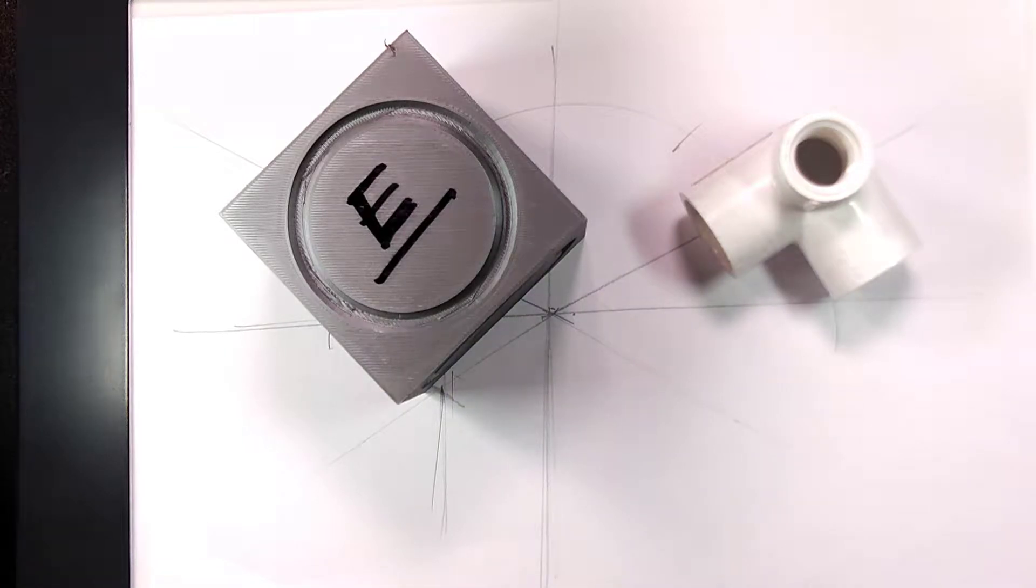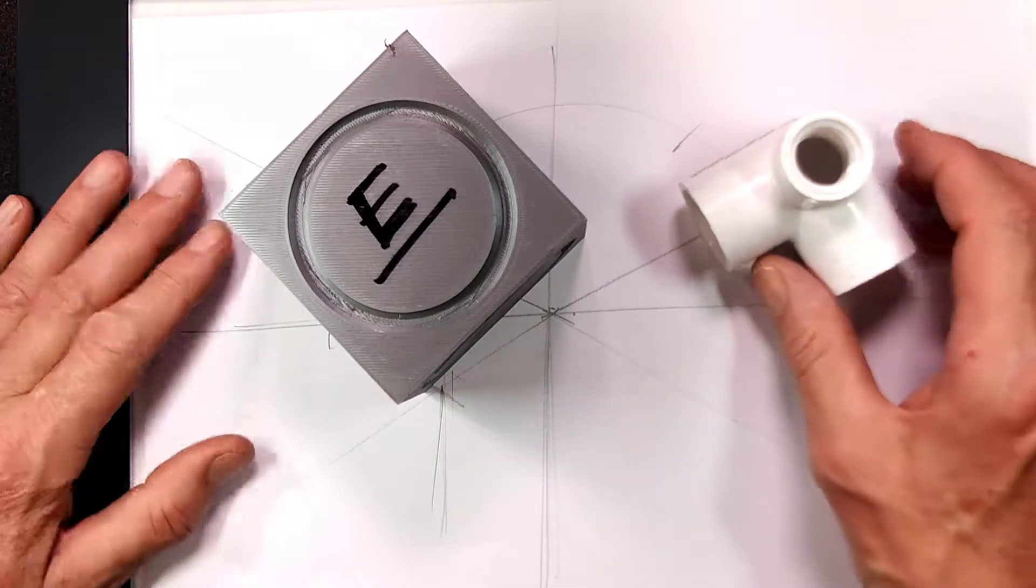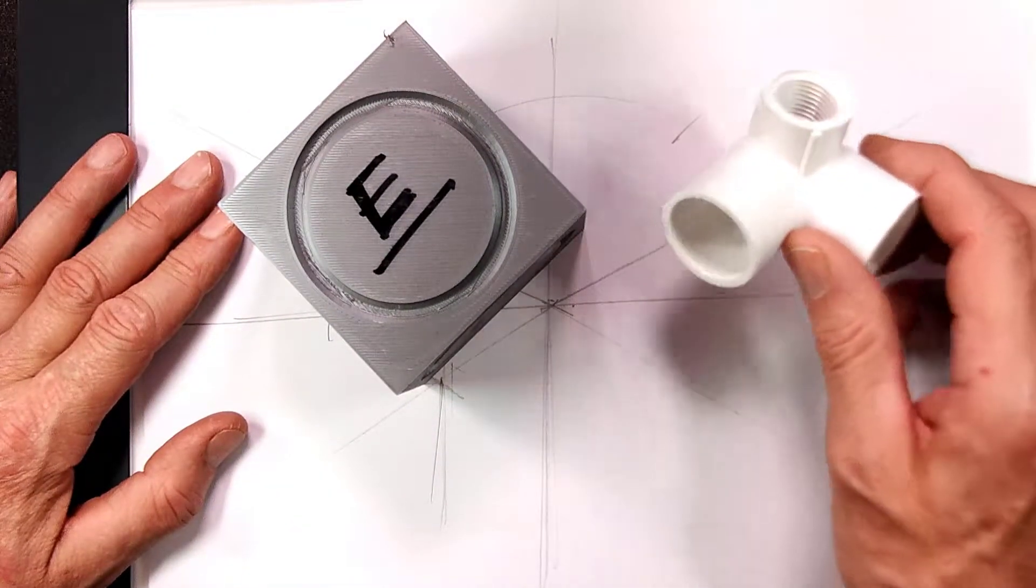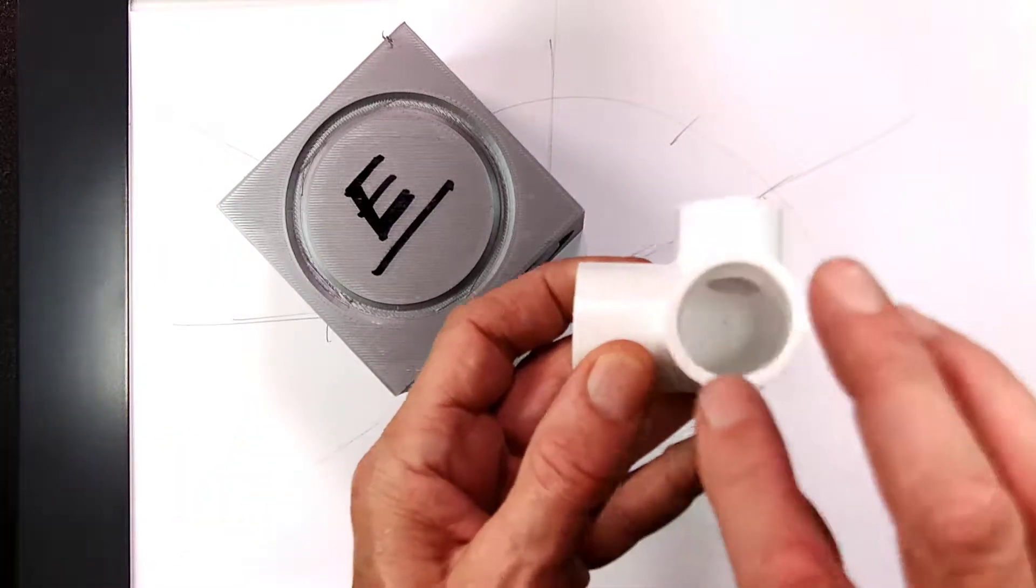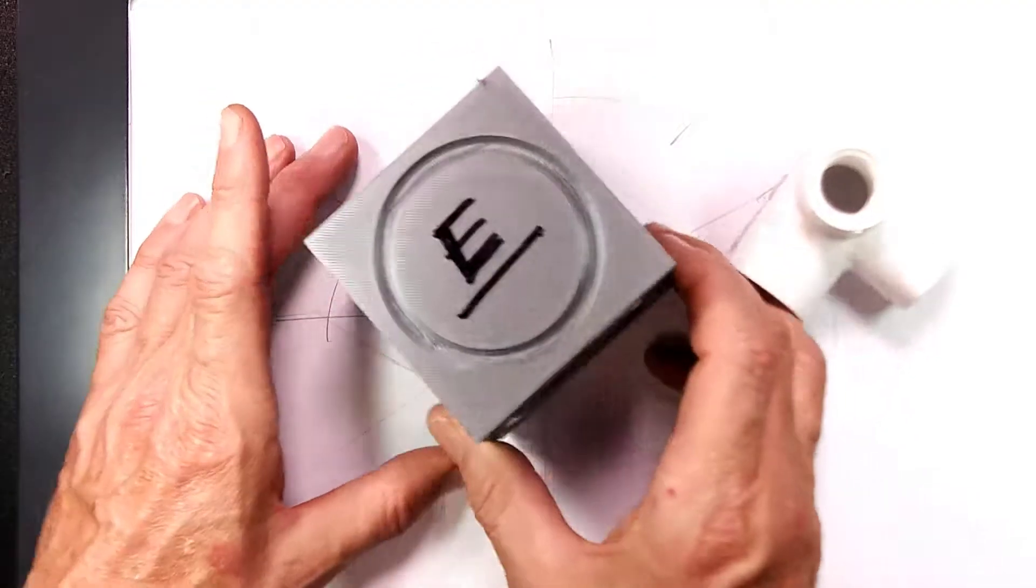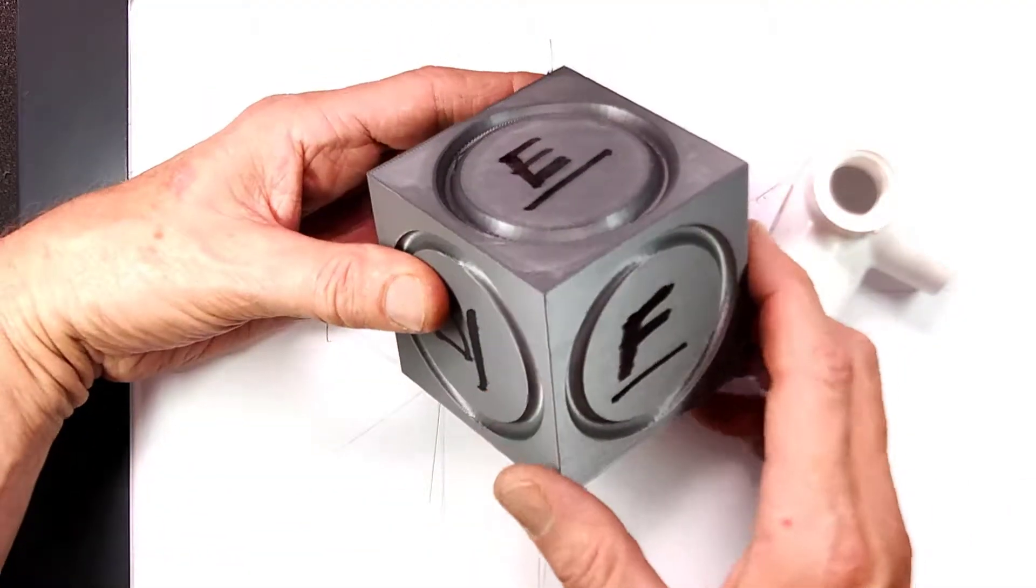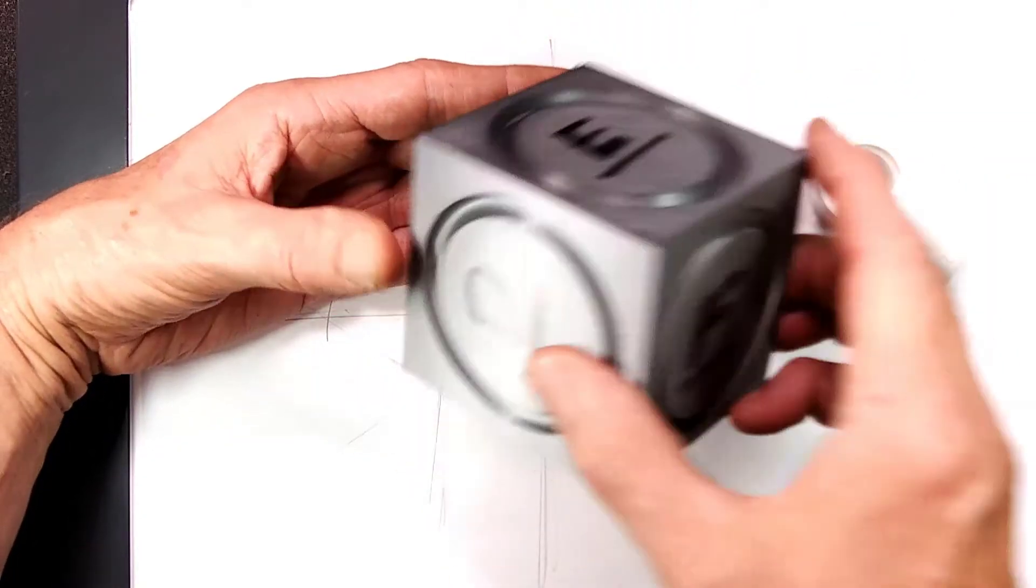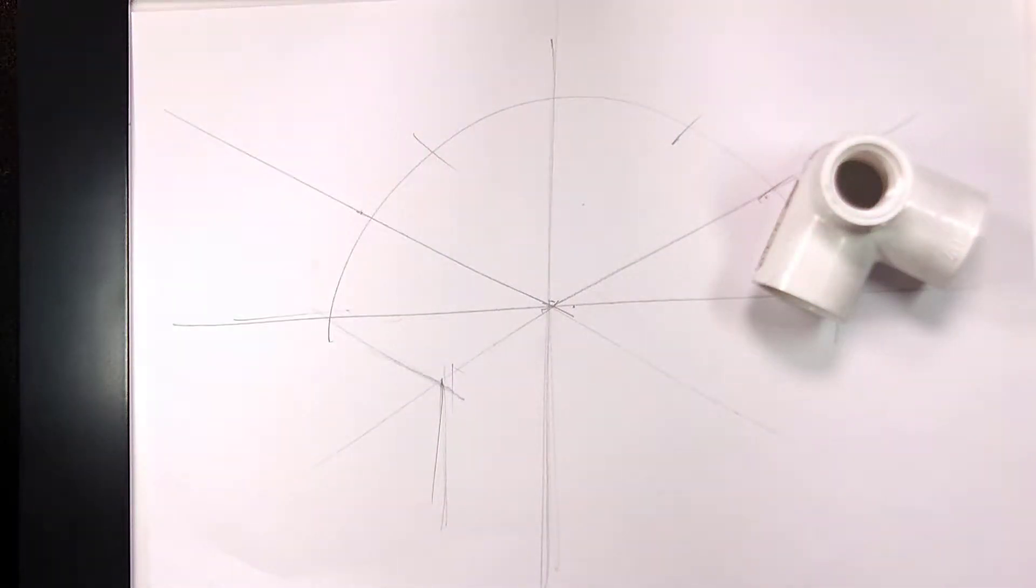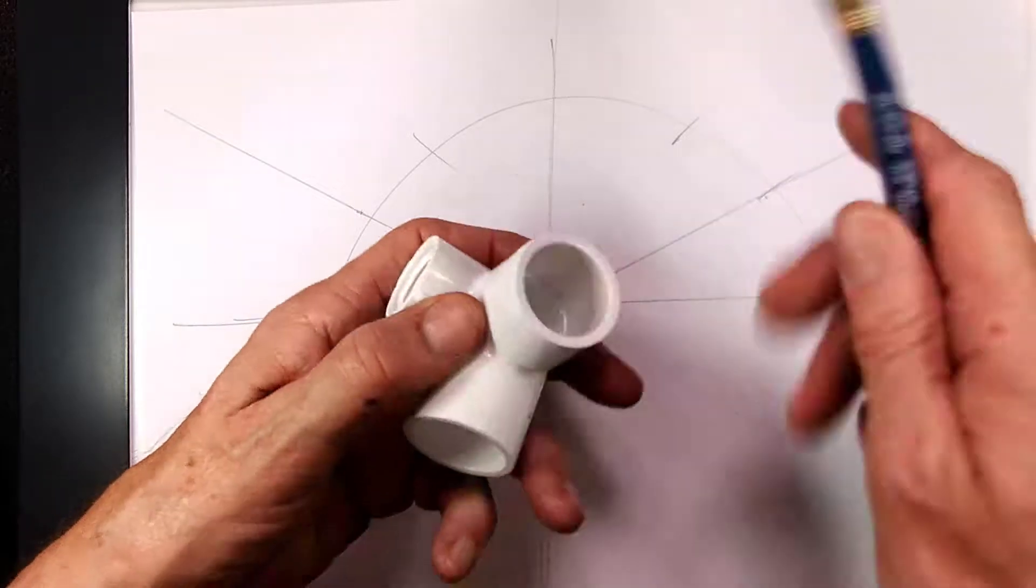In this video I'm going to show you how you can do an isometric drawing of this PVC connector right here, and we're going to draw the circles as ellipses. Remember with an isometric, a circle looks like an ellipse like this. You see three ellipses here.